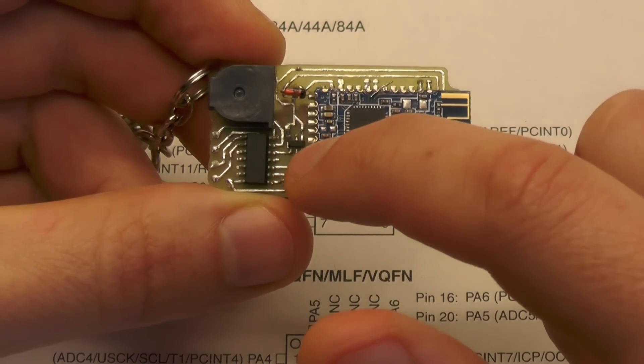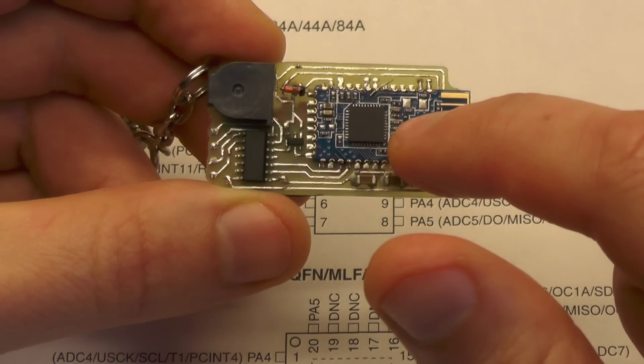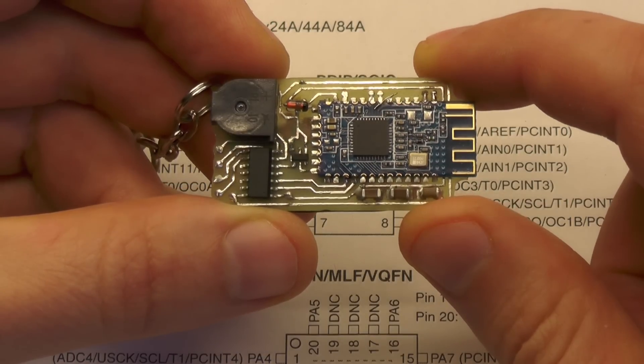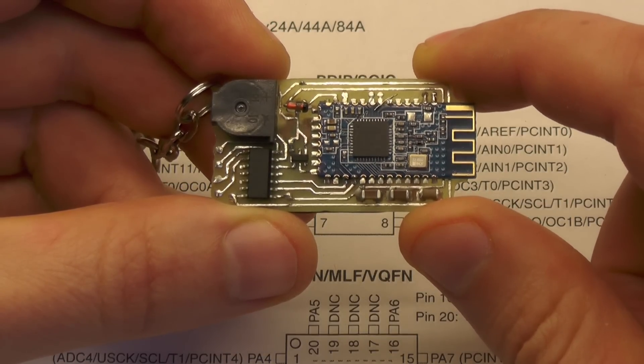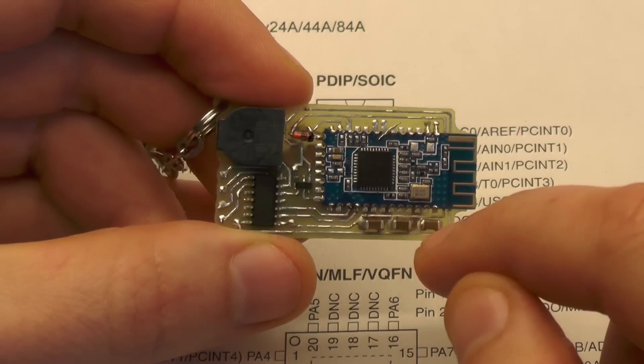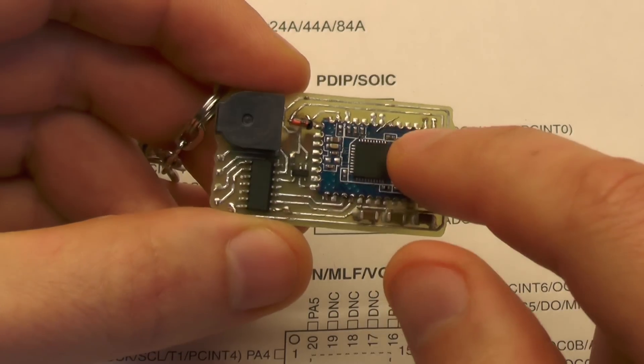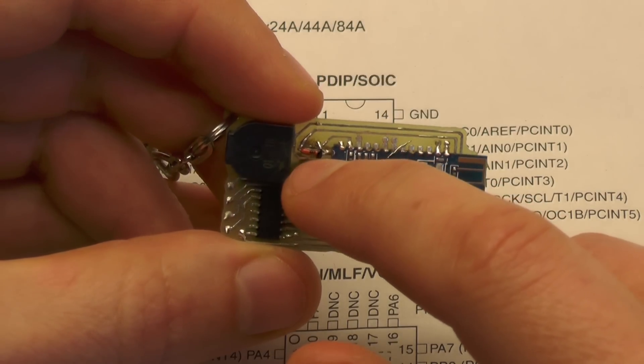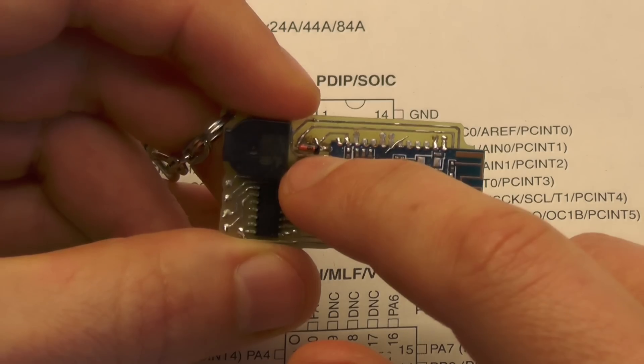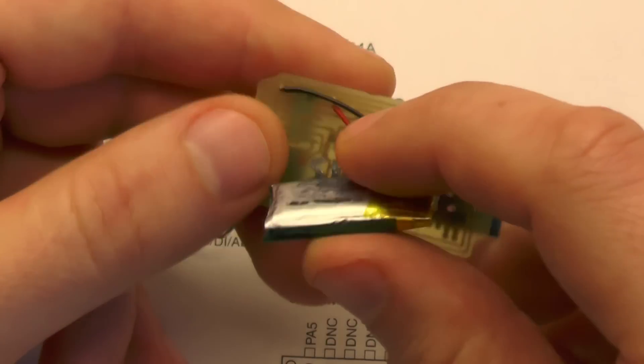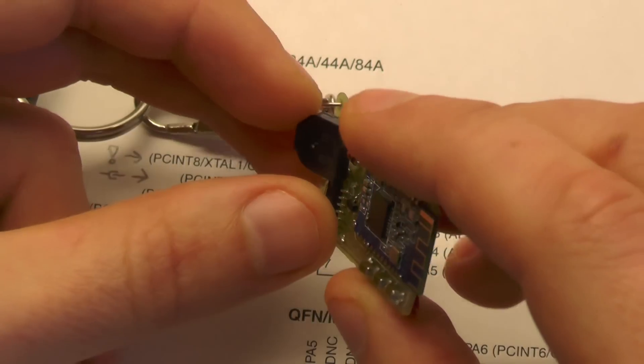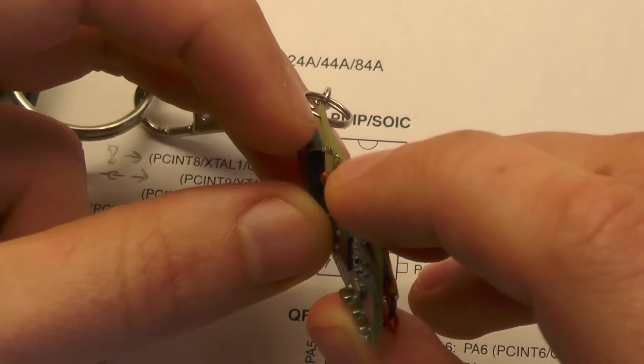The ATtiny24 uses a MOSFET to turn on the Bluetooth module and checks if there is a connection. If there is no connection it just powers off for another 8 seconds. There are some caps for stability and the power to the HM10 module is lowered with this simple diode by 0.6V. This is necessary since the battery can be charged up to 4.2V. The sound is generated with this old buzzer that I got from my Nokia mobile phone.